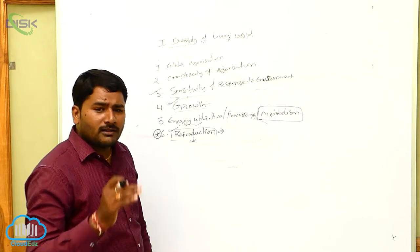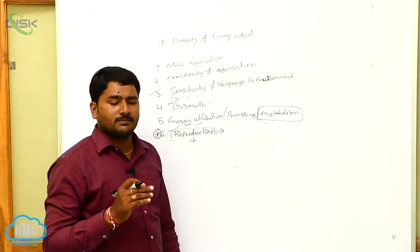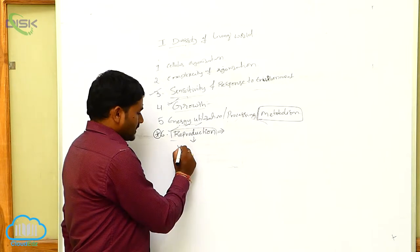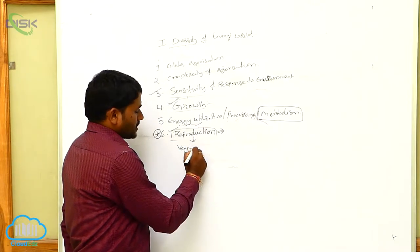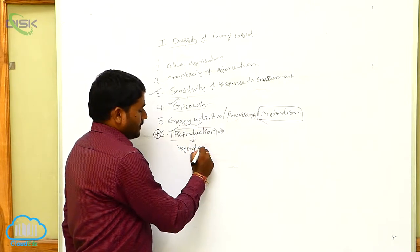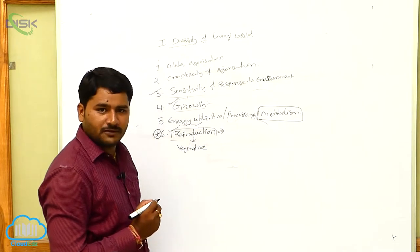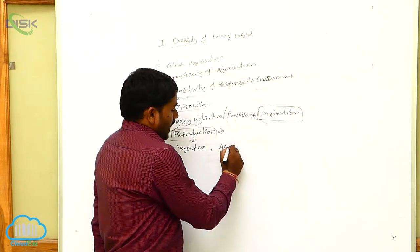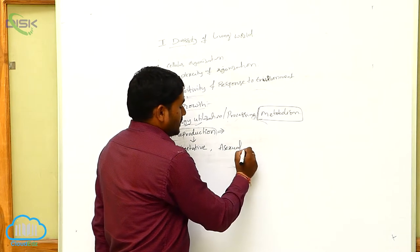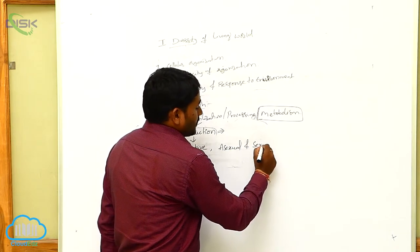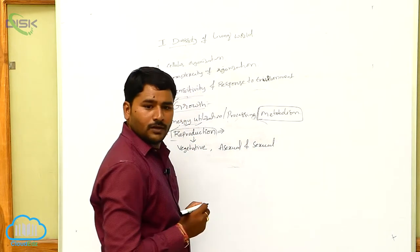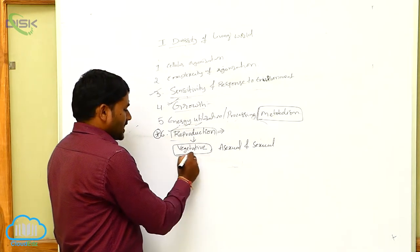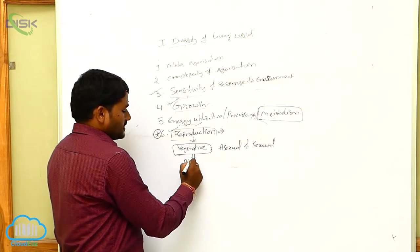Generally, in all living organisms, reproduction occurs in different ways. There are different types of reproduction: one is vegetative reproduction, asexual reproduction, and sexual reproduction. Vegetative reproduction generally takes place in plants.